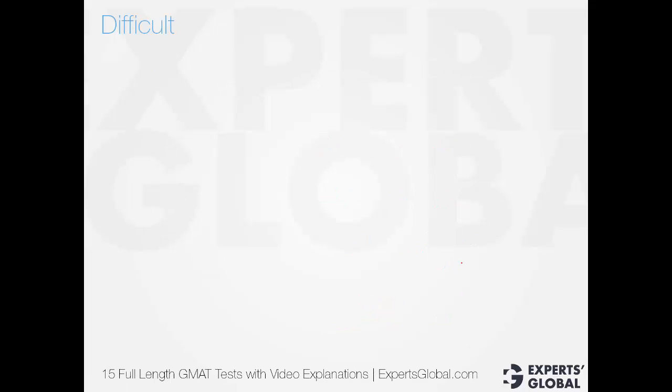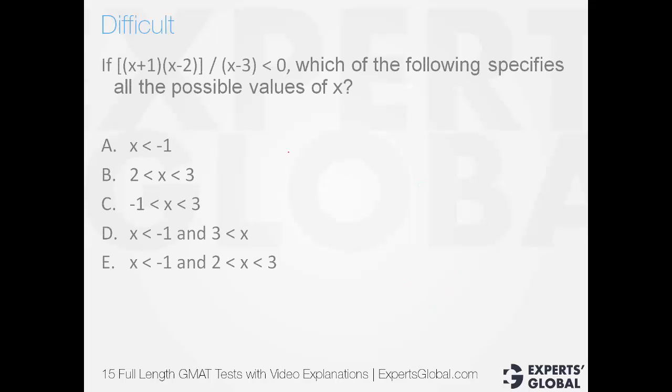Here is a difficult question now on the same concept. Try solving it yourself. Three nodes here: minus 1 for this one, positive 2 for the second one here, and positive 3 for the third one here. Beyond 3, it's going to be positive and then alternate negative positive. And we need negative values. So the value here and the value here would help. The desired answer is going to be less than minus 1 and between 2 and 3. E is the right answer.